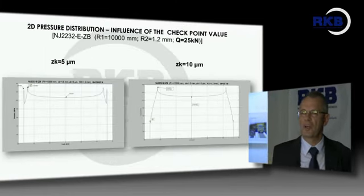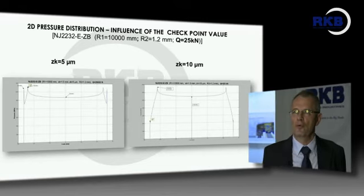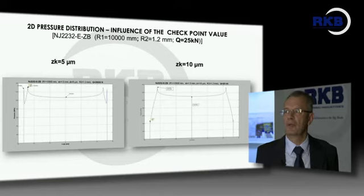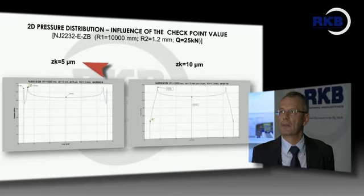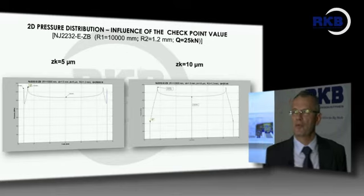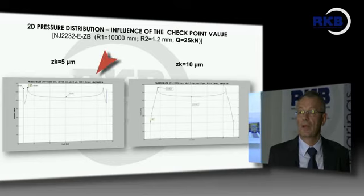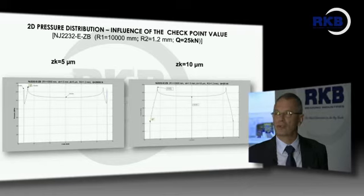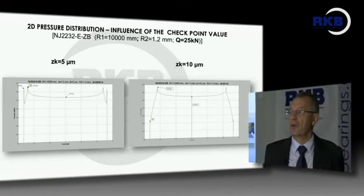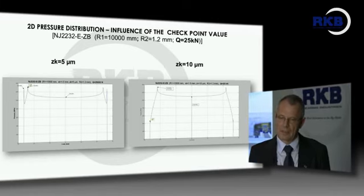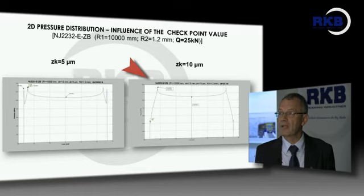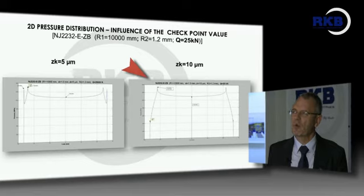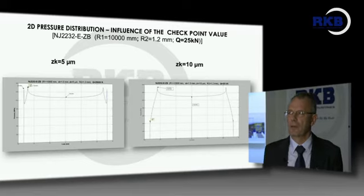Now presenting the influence of the checkpoint value zk. For a very light load of 25 kN, a checkpoint value of zk = 5 microns provides a very good pressure distribution. If we change zk from 5 microns to 10 microns, we obtain a smaller contact length, which increases the medium pressure value while maintaining a very small pressure at the end. However, increasing the checkpoint is not a good solution.